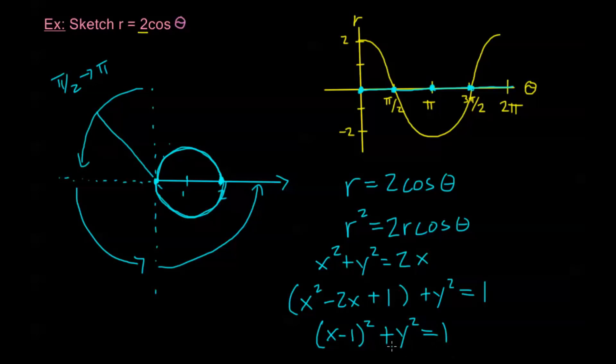Factoring gives x minus 1 squared plus y squared equals 1 — exactly what we drew. This is a circle centered at the point 1, 0 with radius 1. The reference graph is not the actual polar graph; it's just a tool to cross-reference what r value corresponds to each theta, like a table to guide us while drawing the polar graph. More complicated examples are coming in the next few videos.